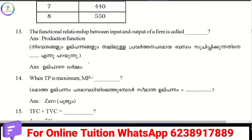The functional relationship between input and output of a firm — how do we call that relationship? It is called the production function.